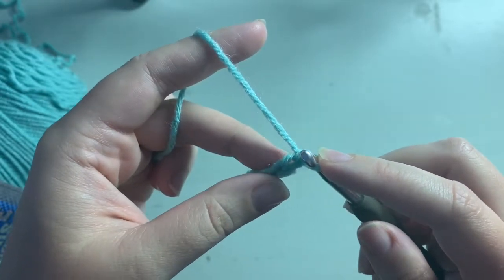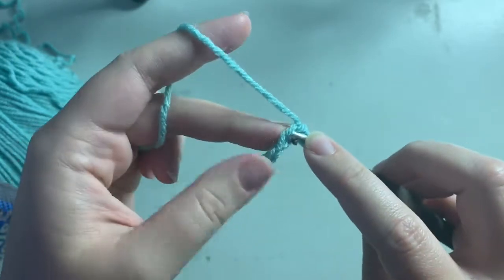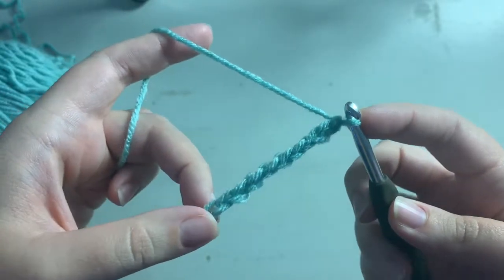Now there are actually a couple ways you can work into a chain. The easiest way and the way I would recommend when you're first learning is to just work into the side all the way down with the V facing you - see the V side.